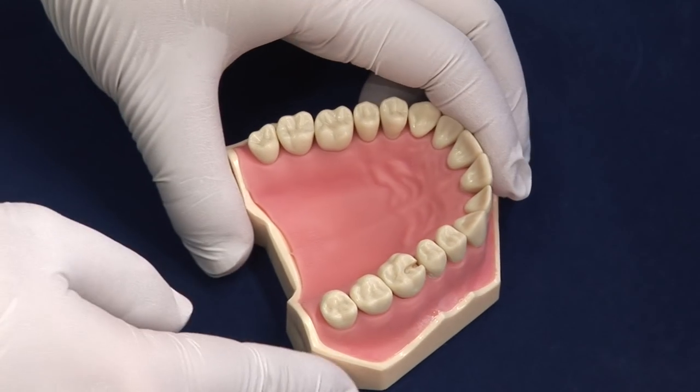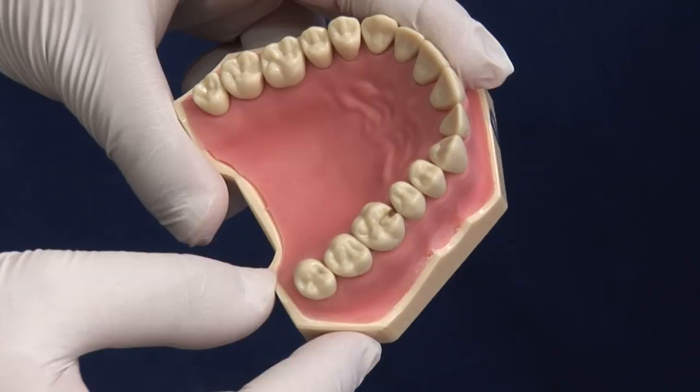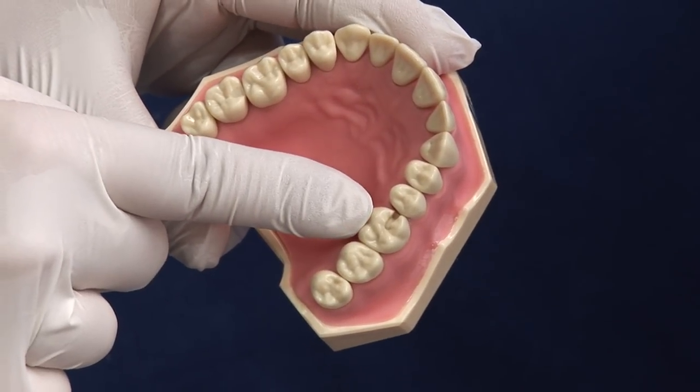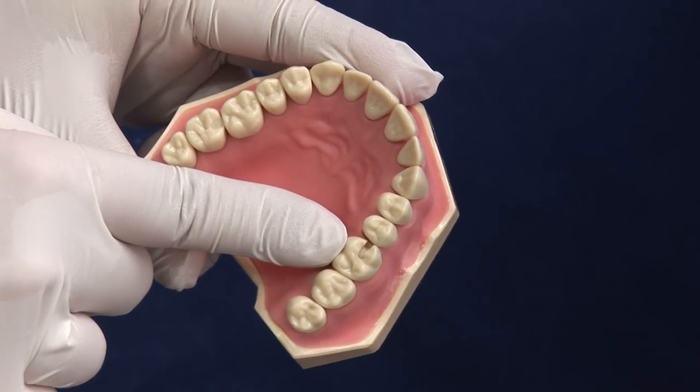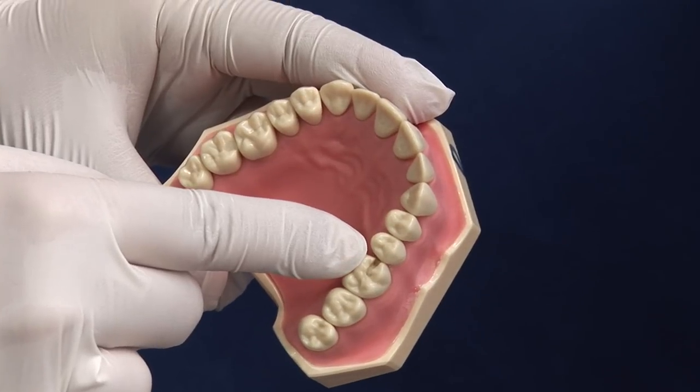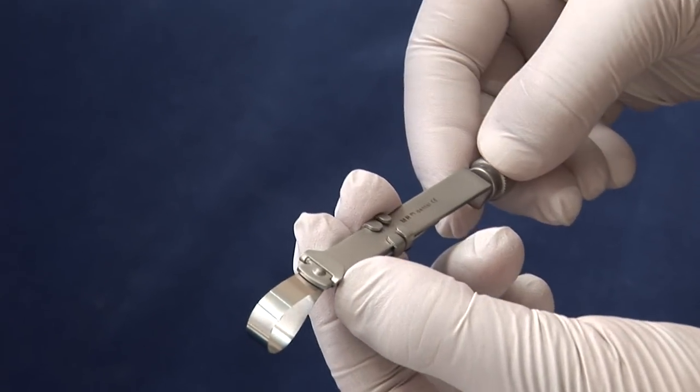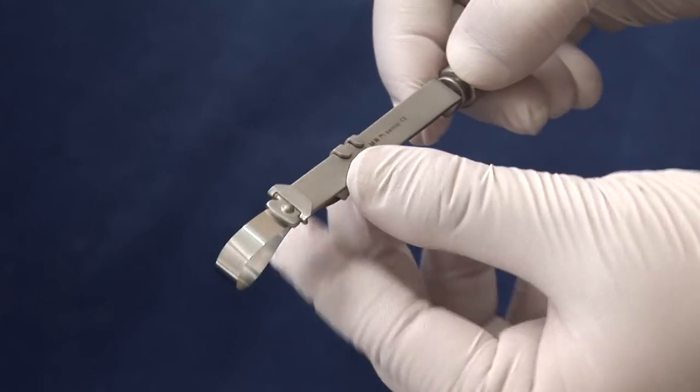This jaw will be used for the purpose of this demonstration. The matrix band will go around the two six, which already has a cavity prepared in it. The latch should be locked into the slot facing gingivally.